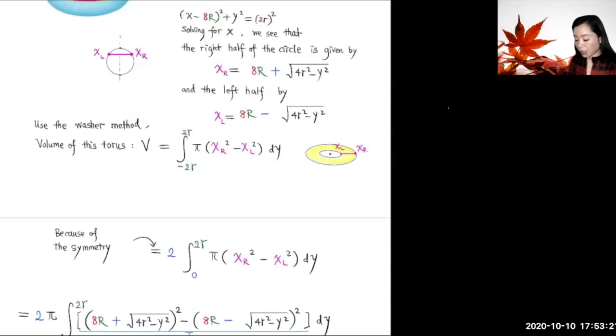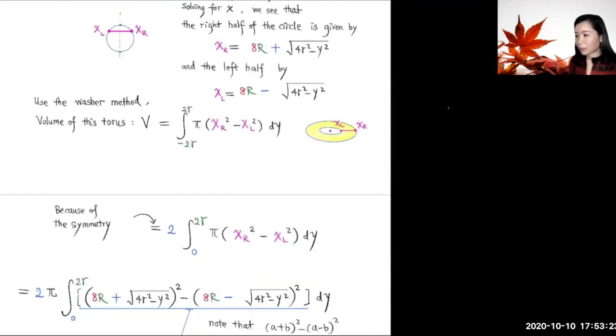Now because of symmetry of this donut-shaped object, you see this symmetry of this upper element and also this is an even function. So you can actually integrate this from 0 to 2r, which corresponds to the volume of the upper half of the donut, and then you double that to get the whole volume.